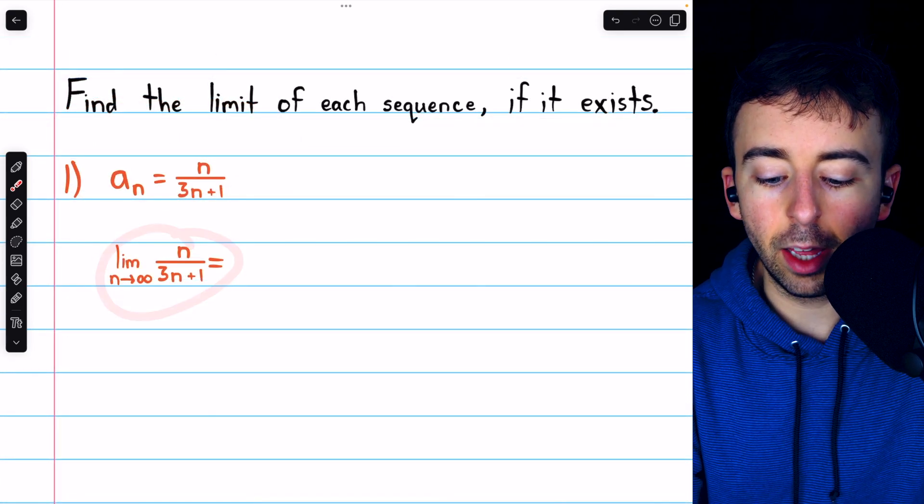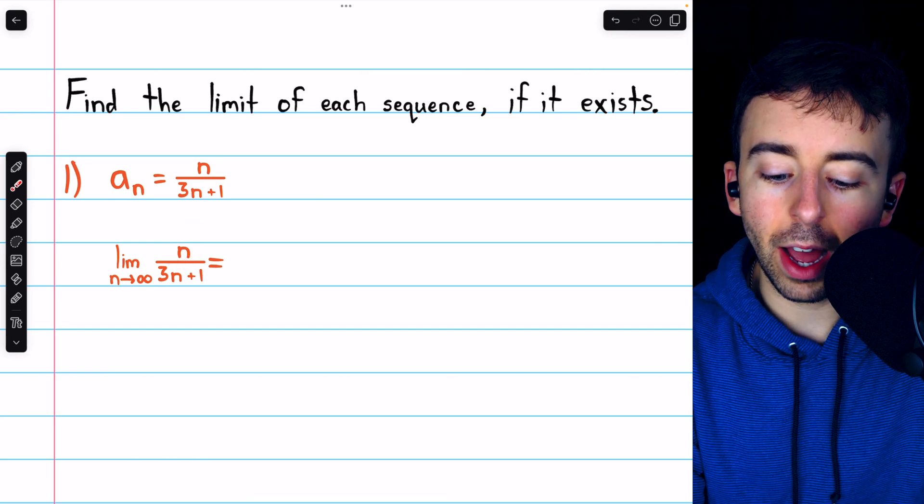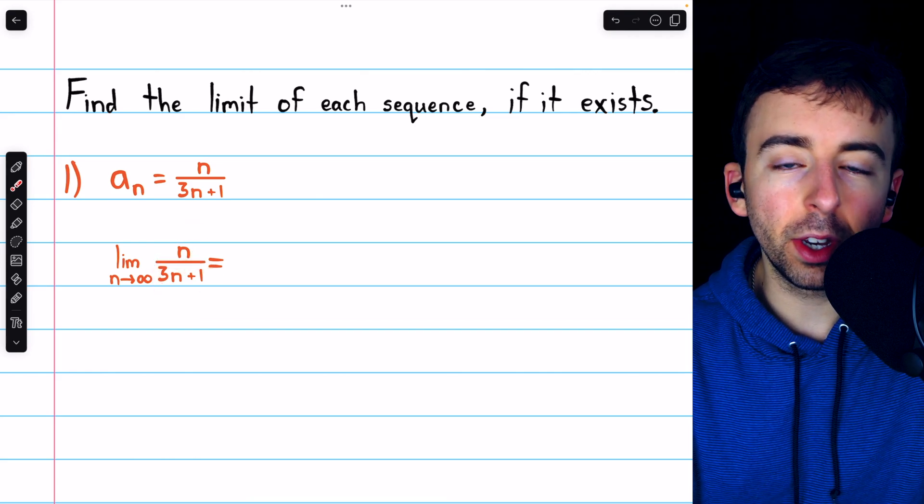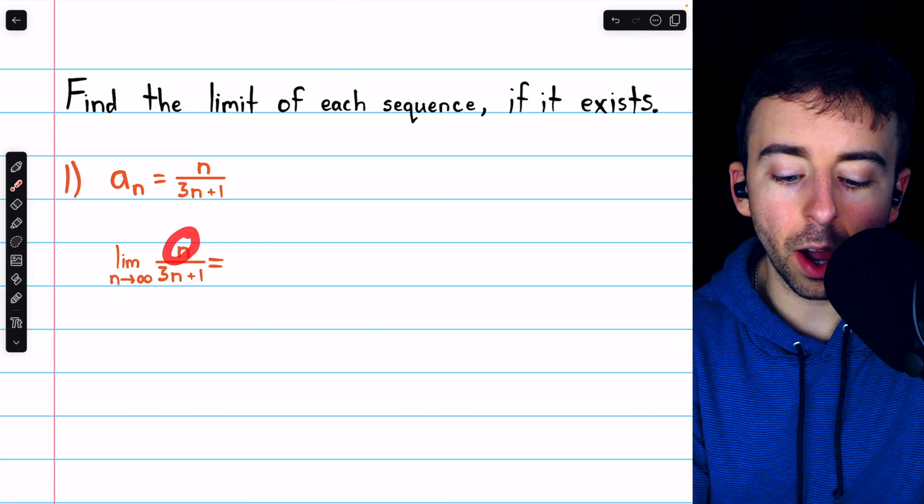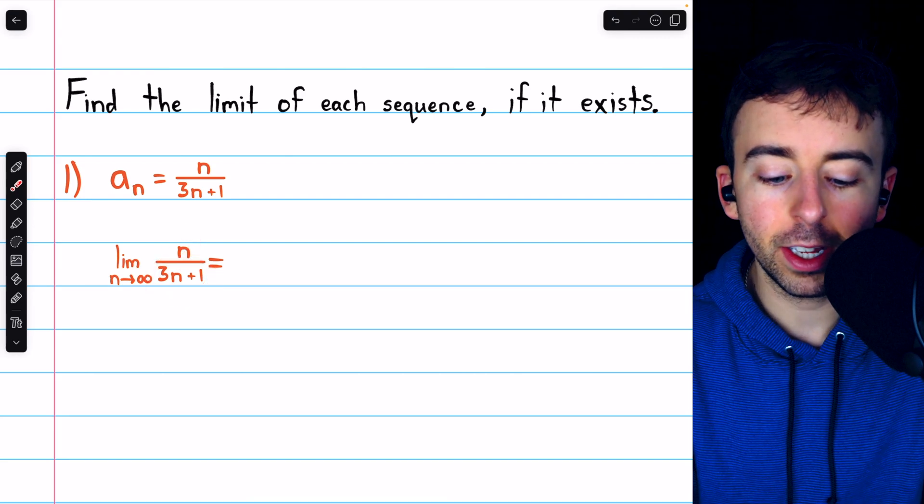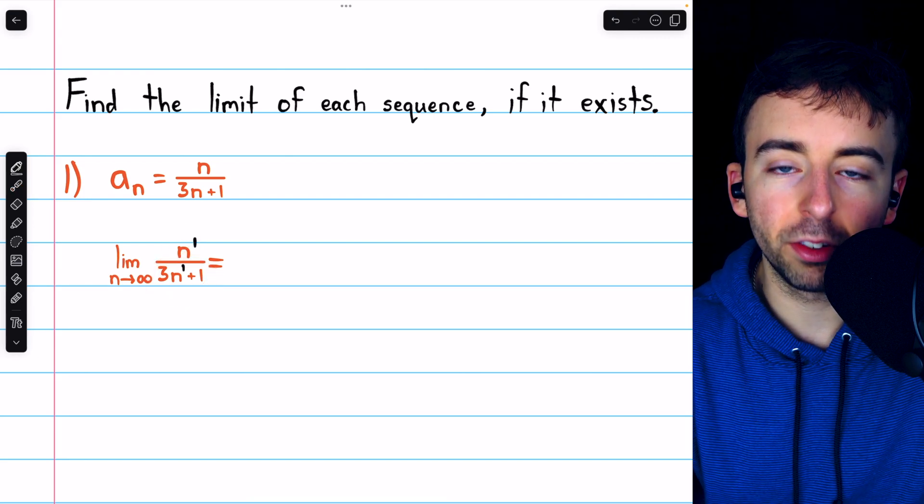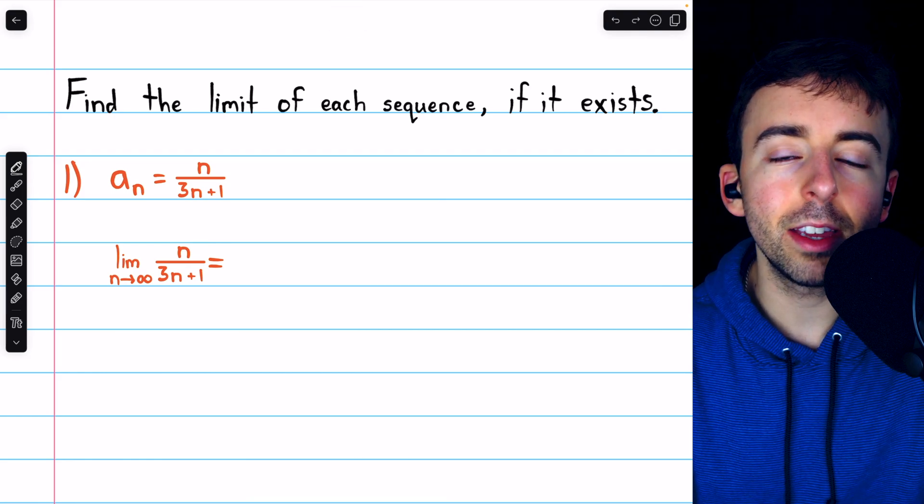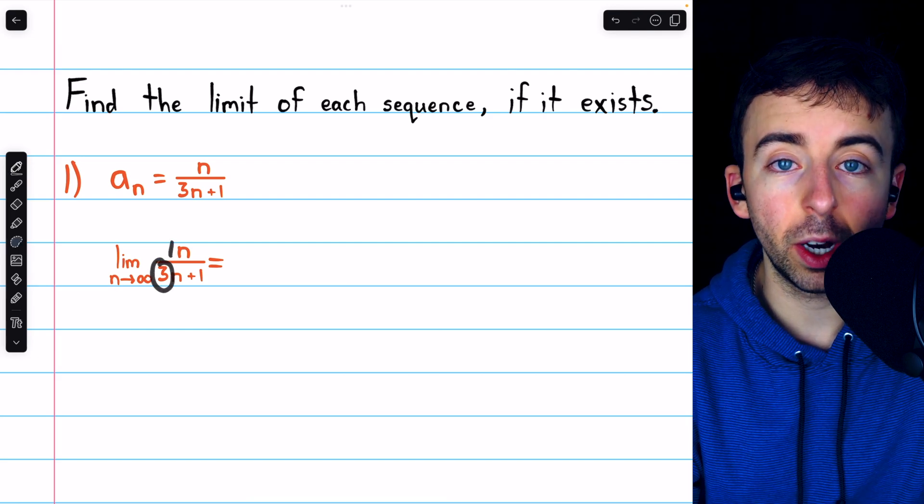Here we are looking at the limit as n goes to infinity of a polynomial, n, divided by this other polynomial, 3n plus 1. You should know that if you're looking at the limit as n goes to infinity of the ratio of two polynomials that have the same degree like they do in this case - this has degree 1, the denominator also has degree 1 - the limit at infinity is just going to be the ratio of the leading coefficients. That is 1 over 3.